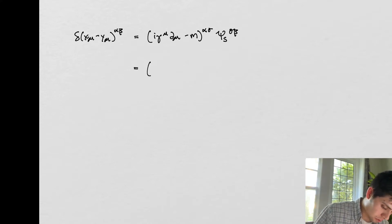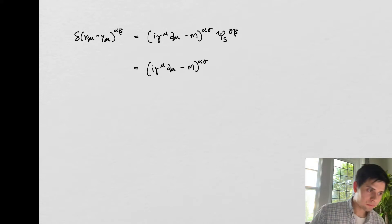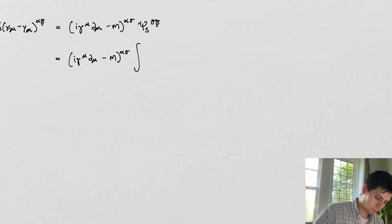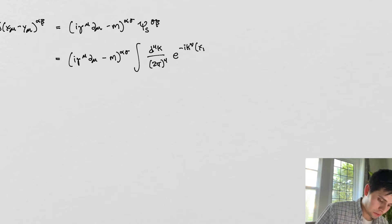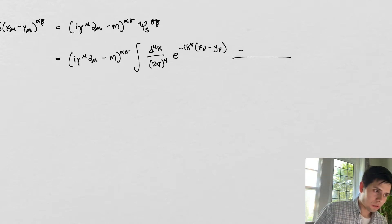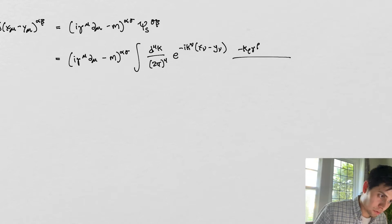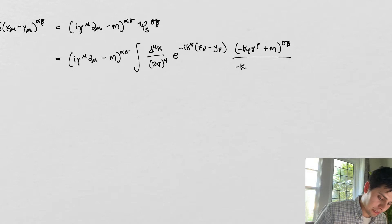We're going to start off and rewrite this as gamma^mu d_mu minus m, with the alpha-sigma indices. And here's our Dirac Green's function: e to the minus i k_mu times (x_mu minus y_mu), and then we have k_rho gamma^rho plus m in the sigma-beta indices, and then minus k_lambda k_lambda plus m squared in the denominator.